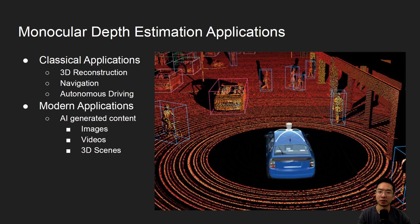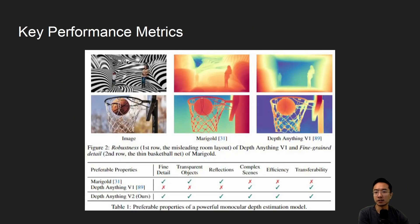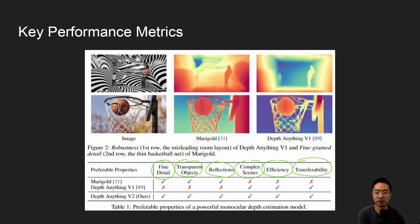Monocular depth estimation has a couple of classical applications: 3D reconstruction, navigation, and autonomous driving. For more modern applications, we're diving into AI-generated content — things like images, videos, and 3D scenes. Some key performance metrics that Depth Anything V2 is trying to hit are fine detail, transparent objects, reflections, complex scenes, efficiency, and transferability.